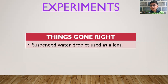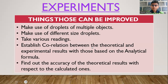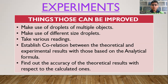Now let's look at the experiments one by one. The things which went right were that a suspended water droplet was used as a lens. The things which could have been improved were to make use of droplets of multiple types of liquids, as discussed earlier — for example, glycerin, alcohol, soapy water, etc.